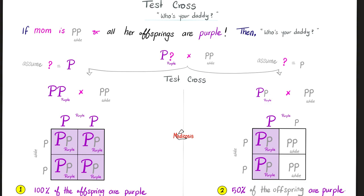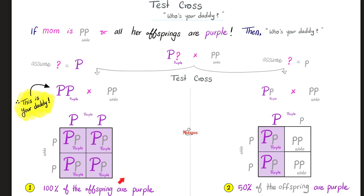I mean, whites. I'm joking. Therefore, what's the result? The result is that this is your daddy. This is the idea behind a test cross. You start with known offsprings, and you go up a step, trying to guess the unknown daddy.